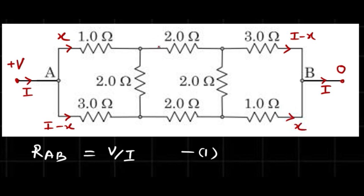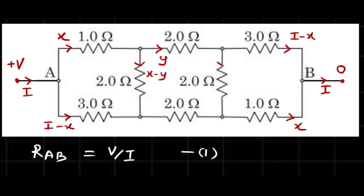On this 2 Ω resistor, let me assume the current is y. Applying KCL at this node: the sum of the two incoming currents equals the outgoing current, so one branch carries x minus y. You can cross-check: x minus y plus y equals x. Similarly, applying KCL at the next node, that current is x plus y minus i.